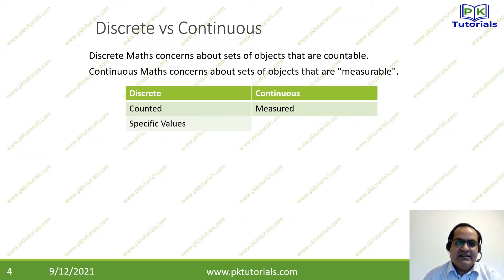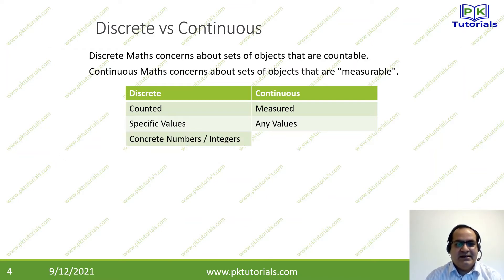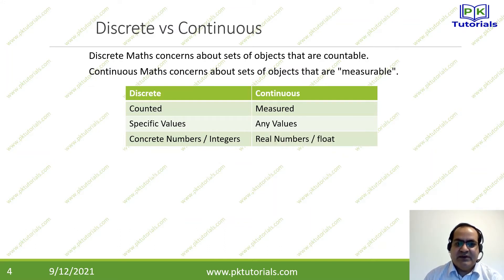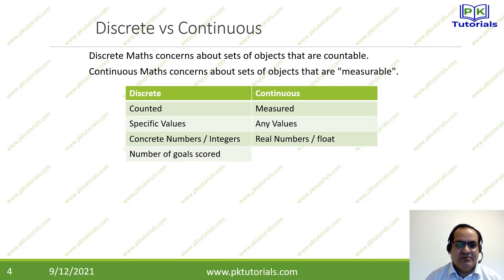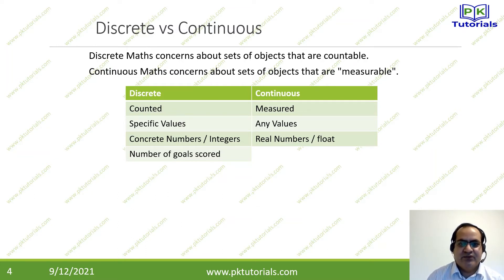In discrete, we take counted values; in continuous, it is about measuring objects. Discrete takes specific values — integers, whole numbers. Continuous can take any type of values including real numbers and floating-point values. For example, the number of goals scored by a football team is discrete — it will be two goals, three, four, five, ten. These are discrete, counted values.